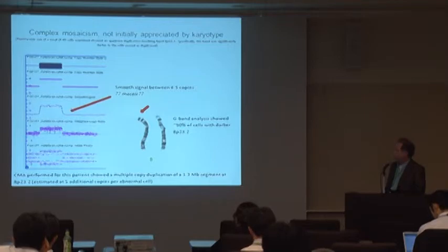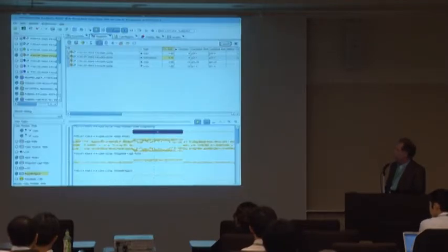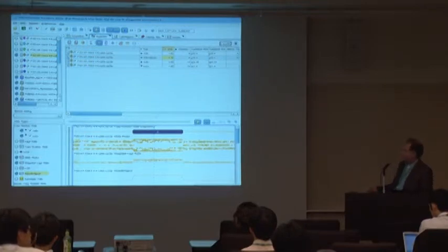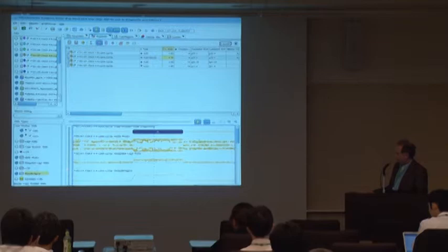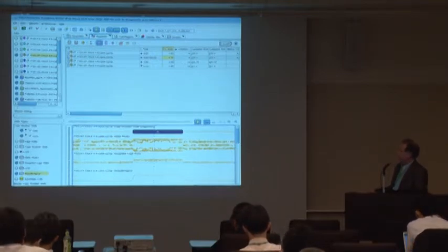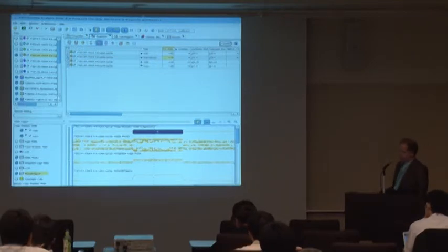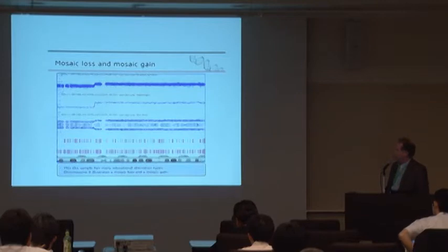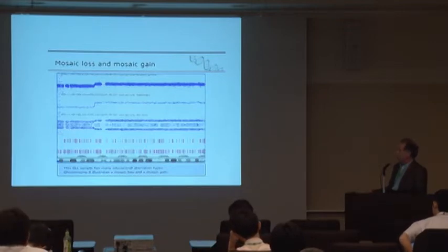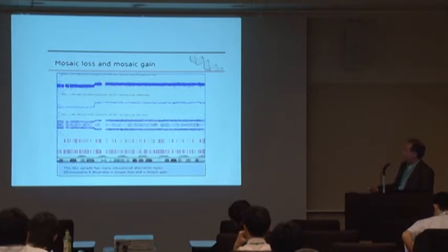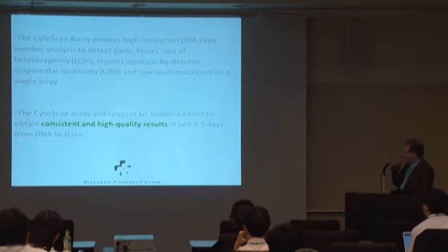This is just a screenshot of the new ChAS software. It has, it'll flag these mosaic calls for you. The old software does not but the new one will tell you there's a gain into a mosaic gain. But we still mainly just use the smooth signal to identify our mosaic calls. This is just a screenshot from the Affymetrix website and it shows you a mosaic loss and gain on the same chromosome. Again, if you just follow along, you can easily tell by the SNPs and just how they change and track. Very nice use of the SNPs.